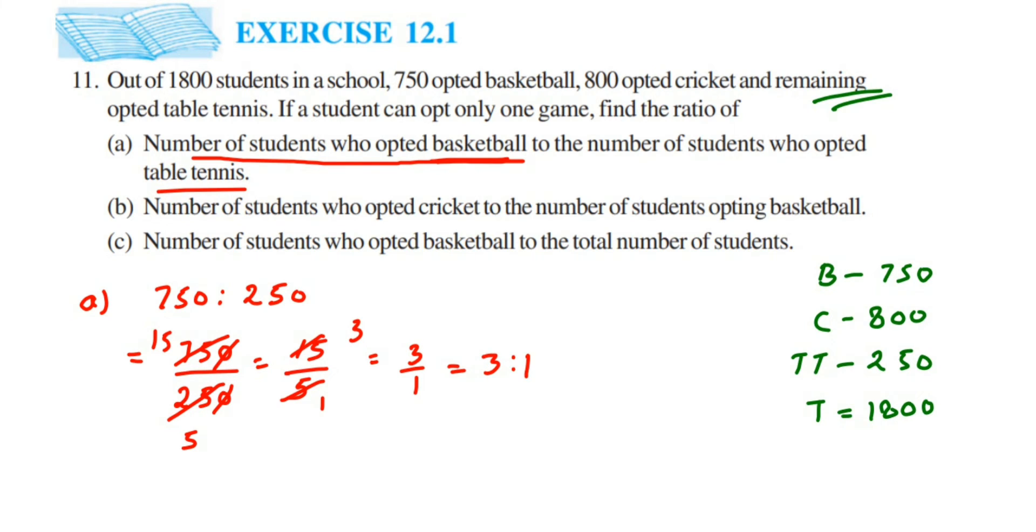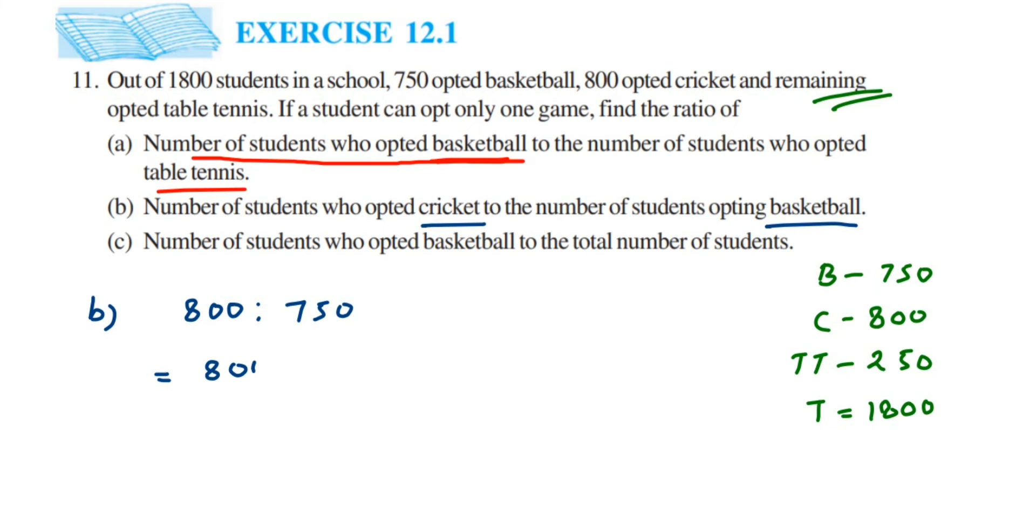So this is the answer for the first question. Now second one: number of students who opted cricket, so cricket is 800, is to number of students who opted basketball which is 750. So convert this into fraction, 800 divided by 750. Cancel the zeros, we got here 80 and 75.